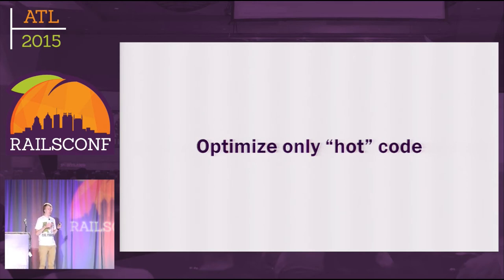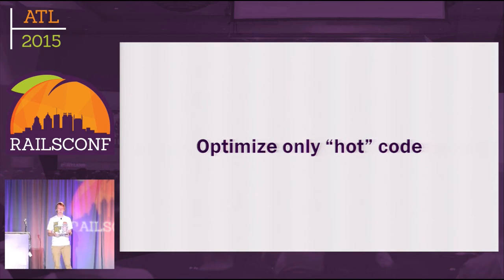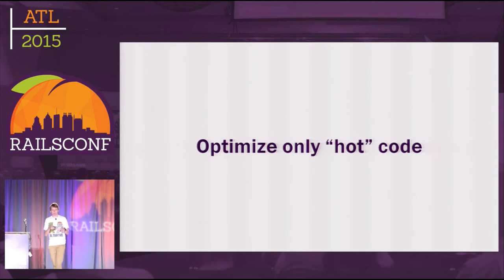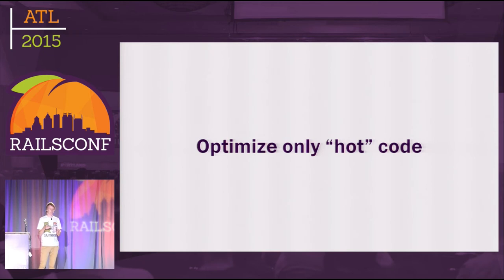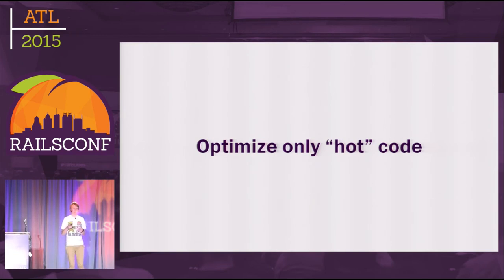It's good to remember that we want to optimize only hot code — code which is called frequently, on every request, maybe many times on every request. Rails framework code is usually all hot because it's used by thousands of different Rails applications. It makes no sense to optimize a piece of code called once a month from a background job — you won't benefit much.